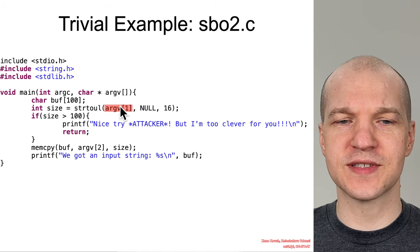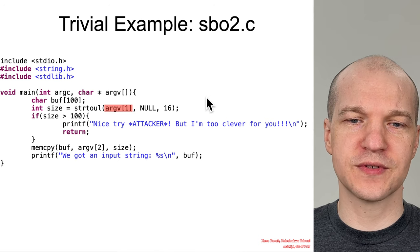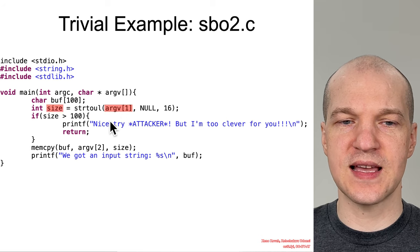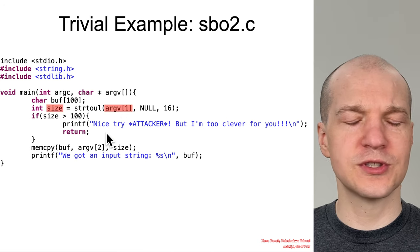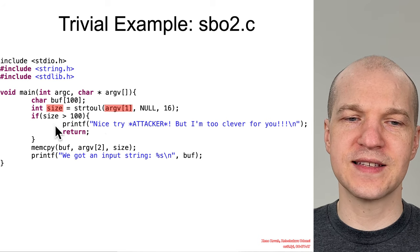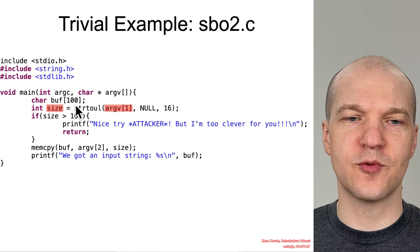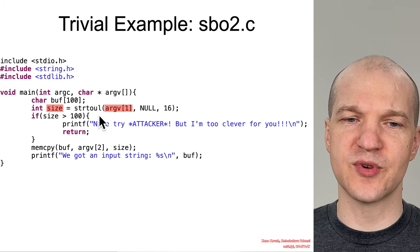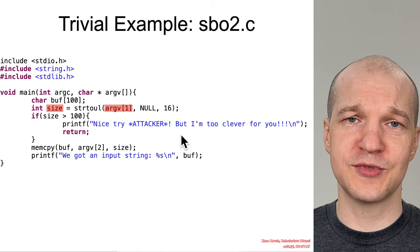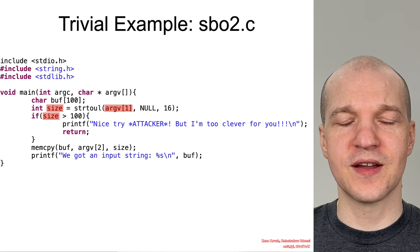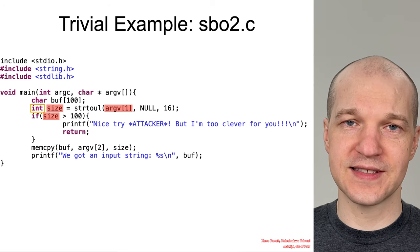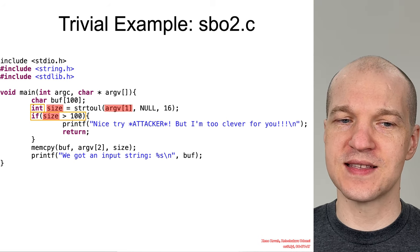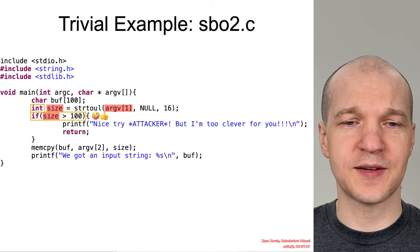Let's go back to our original stack buffer overflow type vulnerability. We've got attacker-controlled input being passed into size, and now, because we're so much older and wiser, we're going to add a sanity check: if size is greater than 100 — the size of the buffer — nice try, attacker, but I'm too clever for you. Unfortunately, this is a signed size, and that means this is an insanity check.